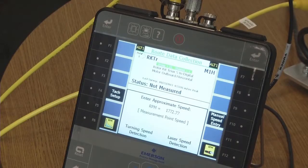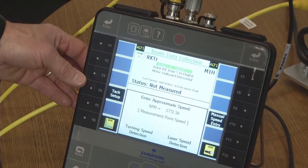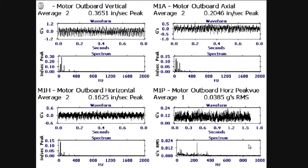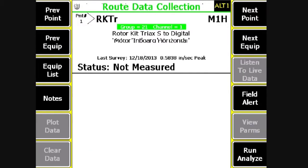Since this is a variable speed motor, the analyzer is asking me to confirm the speed from the laser speed detection. Confirm, pressing the enter button, and data collection on the three axes plus PeakView is complete on the motor outboard.